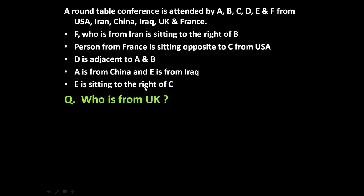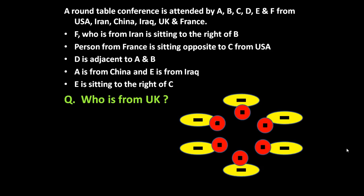Whenever such types of problems are asked, there will always be three, four, or five questions. So once you know how to analyze the given data in circular format, you can answer all of them. To answer such questions, let us draw a circular table. There are six persons, so let us draw six circles around a circular pattern. These six circles will represent the six representatives and the yellow will represent the six countries. Now let us go statement by statement.